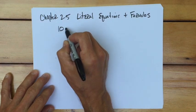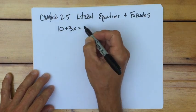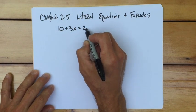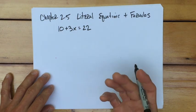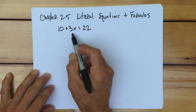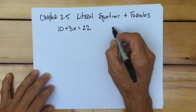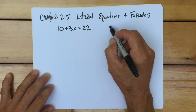Instead of, let's say, 10 plus 3x equals 22, and we have an equation where we would solve for x, we're going to have something that involves more variables. That's really all the difference is.